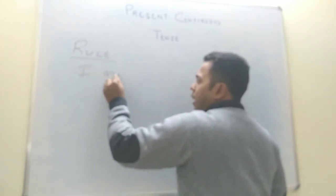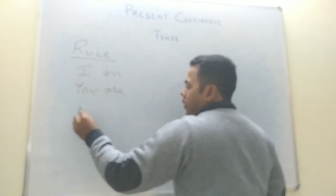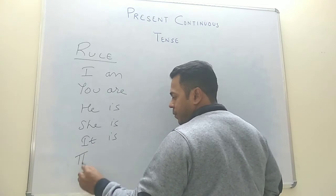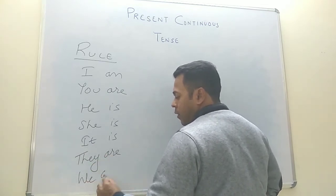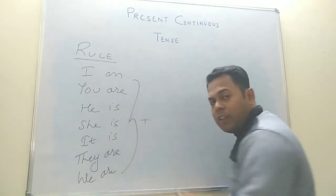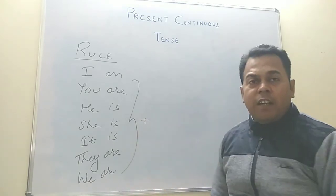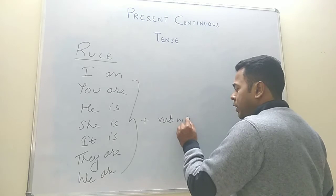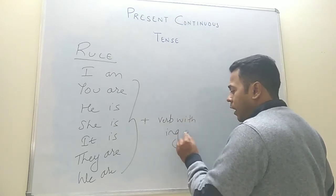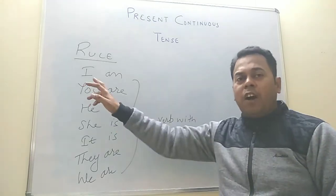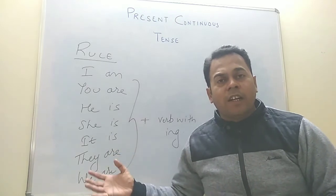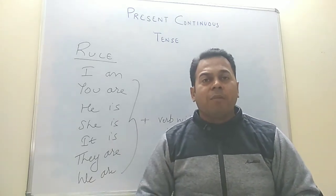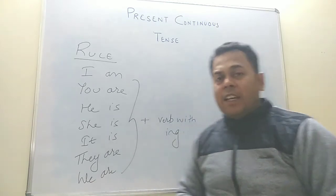Now let's move to the rules section. We can use: I am, you are, he is, she is, it is, they are, we are. The thumb rule is that in any continuous tense you have to use the verb with -ing. For example: 'I am running fast,' 'you are talking to me,' 'he is reading a book,' 'she is cooking dinner,' 'it is raining like cats and dogs outside,' 'they are working hard,' 'we are applying for jobs.'